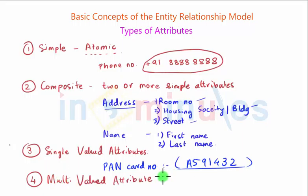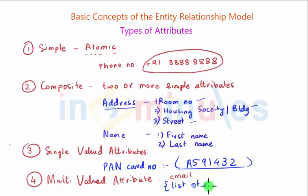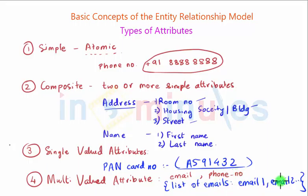The fourth type is multi valued attributes. In a multi valued attribute, you have a list of values instead of a single value. So consider the attribute email — a person may have a primary email and a secondary email. Hence when we make provisions for storing emails, we need to have a list of emails like email one, email two, and so on. A similar example could be phone numbers. Most people today have more than one phone number, so we need to store a list of phone numbers. These types of attributes come under multi valued attributes.